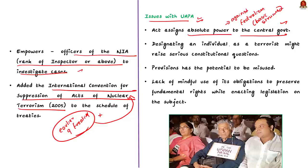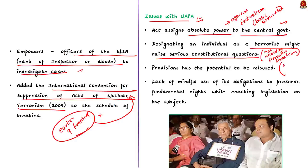Secondly, the provision which designates an individual as a terrorist might have multiple consequences. An individual cannot be called a terrorist prior to conviction in a court of law — in our country, we follow the principle of innocent until proven guilty. But through this amendment, even before a person is deemed guilty by the court, he can be designated as a terrorist by the central government. This might result in wrongful designation of the terrorist tag, causing irreparable damage to the person's reputation, career, and livelihood.